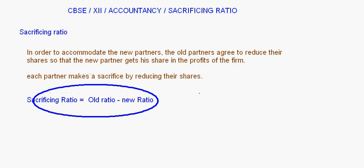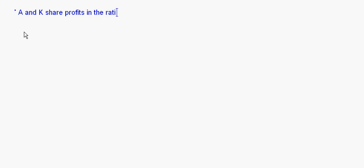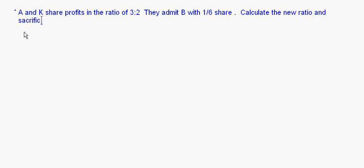Now I will take up a small question to show you how the sacrificing ratio is calculated. A and K share profits in the ratio of 3:2. They admit B with one-sixth share. Calculate the new ratio and the sacrificing ratio. The old ratio of A to K is 3/5 to 2/5.